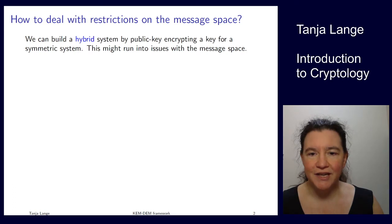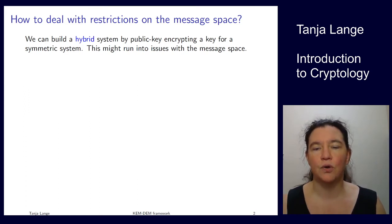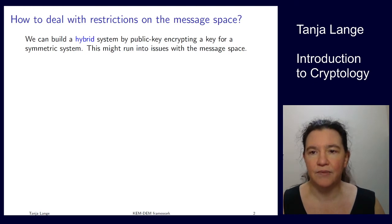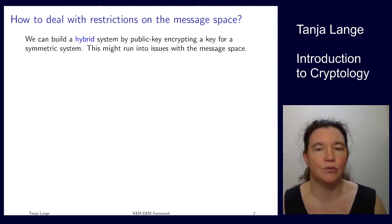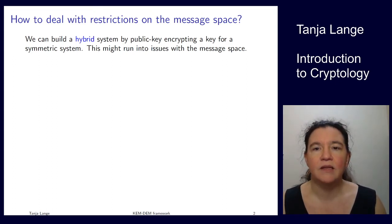We have now seen the RSA encryption system and the ElGamal encryption system. For both of those, we have to ensure our messages match the required format. For RSA, the message must be between 0 and n-1, and for ElGamal, the message must be an element of the group — typically an integer between 1 and p-1. Then we can encrypt it.